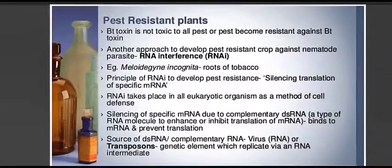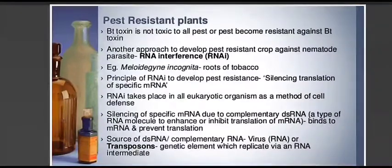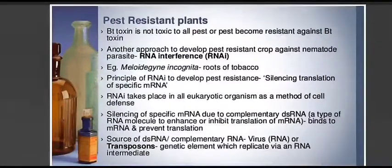Silencing of specific mRNA is due to complementary double-stranded RNA, which is a type of RNA molecule that can enhance or inhibit translation of mRNA. It binds to the mRNA and prevents the translation of that mRNA. The source of this double-stranded RNA complementary to mRNA is taken with the help of viruses which have RNA as genetic material, or with the help of transposons — genetic elements which replicate via an RNA intermediate.